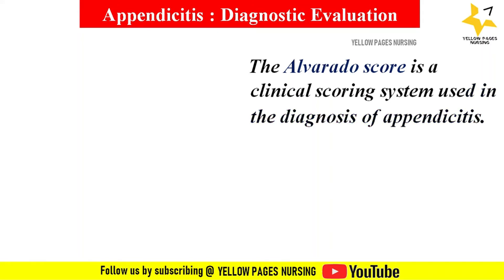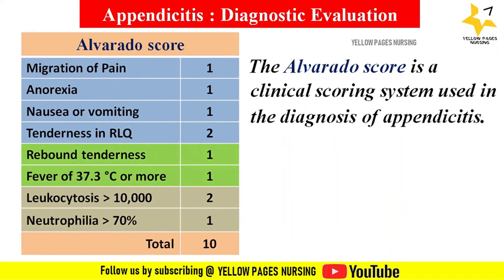The Alvarado score is a clinical scoring system used in the diagnosis of appendicitis. Scoring is based on symptoms, signs, and laboratory findings: migratory pain to the right iliac fossa scores 1; anorexia or ketones in urine scores 1; nausea or vomiting scores 1; tenderness in the right iliac fossa scores 2; rebound tenderness (Blumberg's sign) scores 1; fever of 37.3°C or more scores 1; leukocytosis more than 10,000 scores 2; and neutrophilia more than 70% scores 1 — for a total of 10.